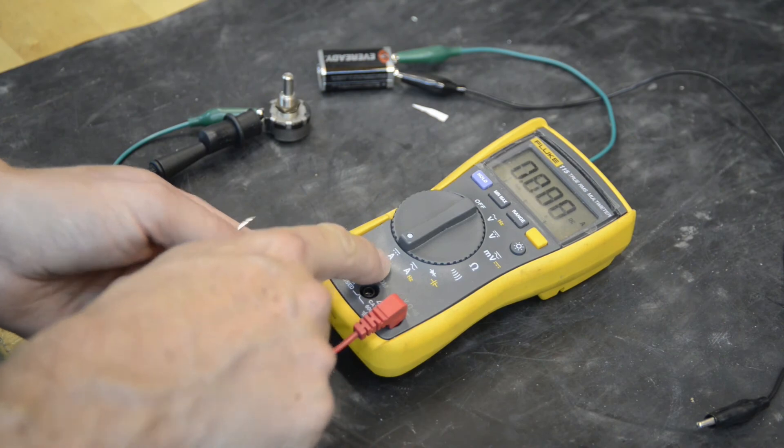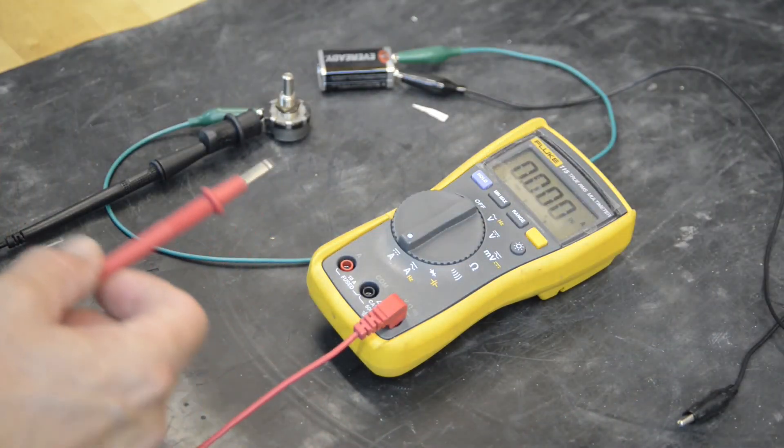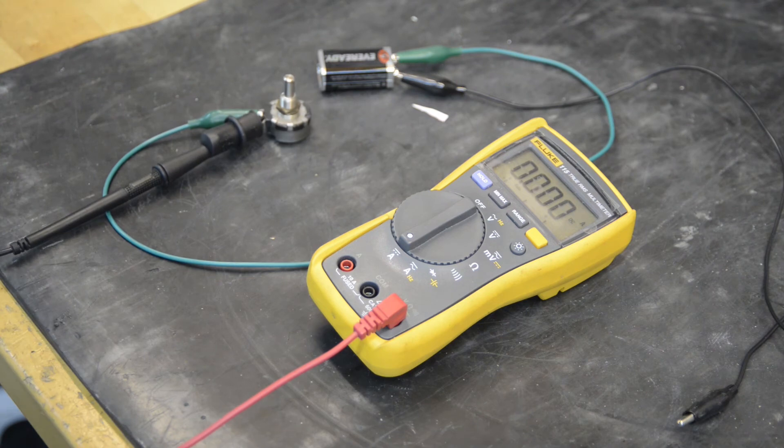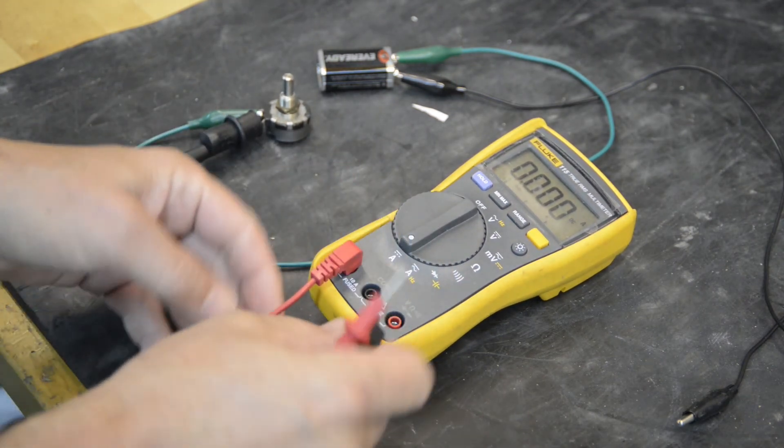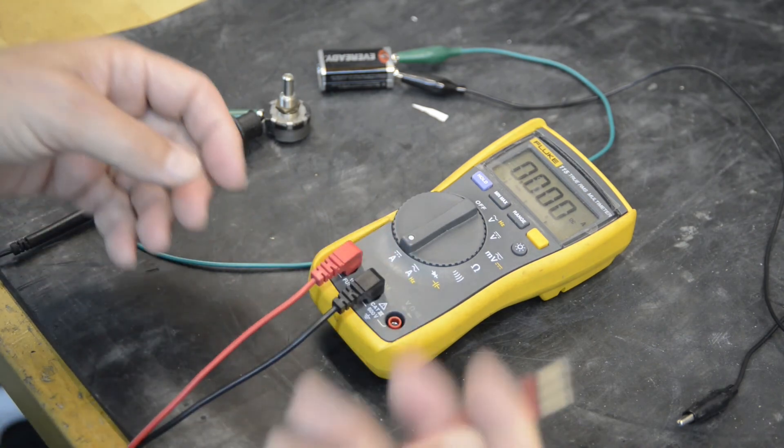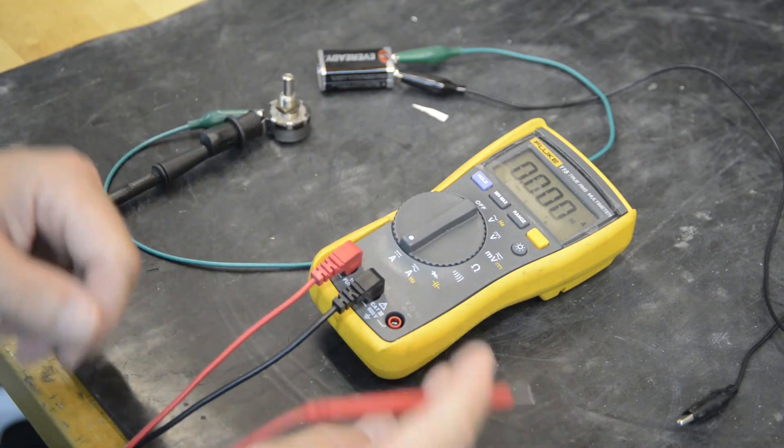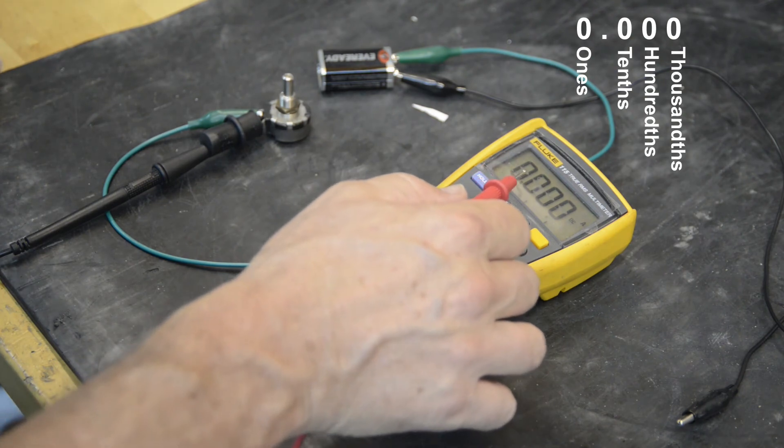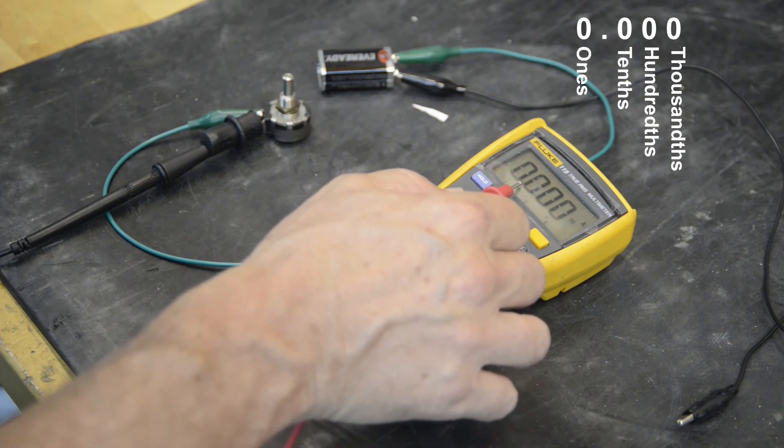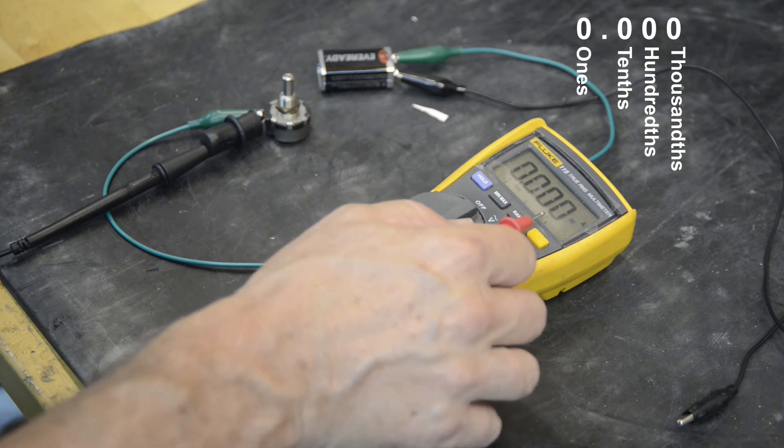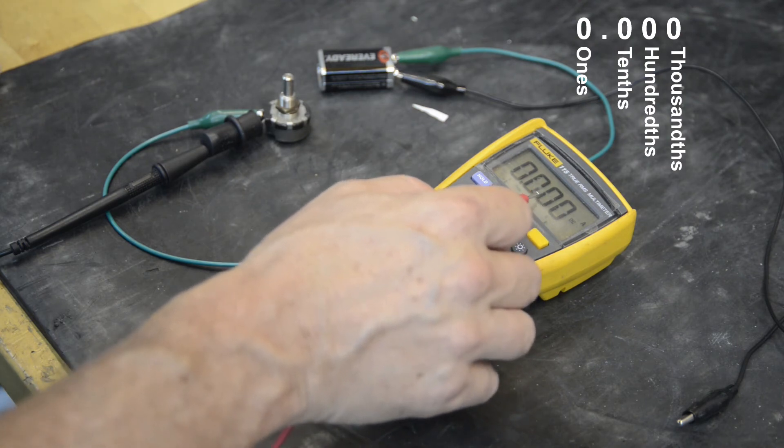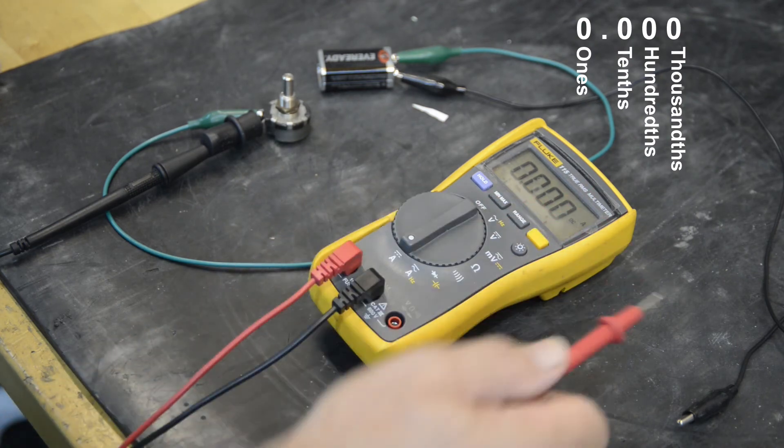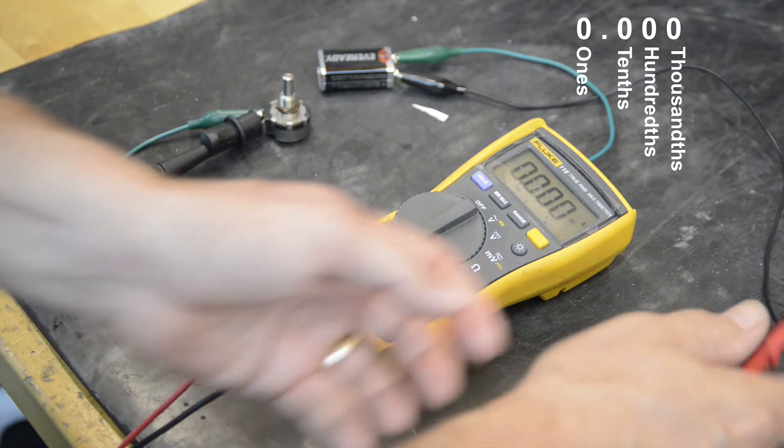So I'll go to DC amps and hook up our leads for amps. And we'll run our test setup. But just so you know, this is the ones digit. This is the decimal one hundredths, tenths, and thousandths. So one milliamp would be one right here. So we want to see four to 20. So this will be two and a zero for 20 milliamps. So we'll see what happens.